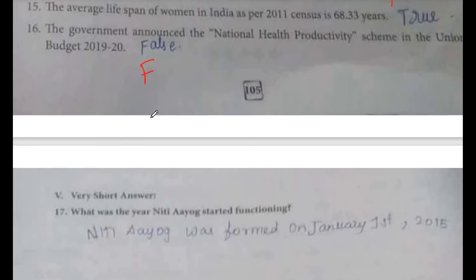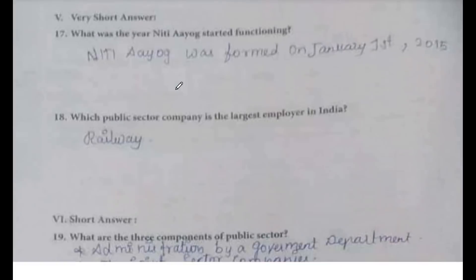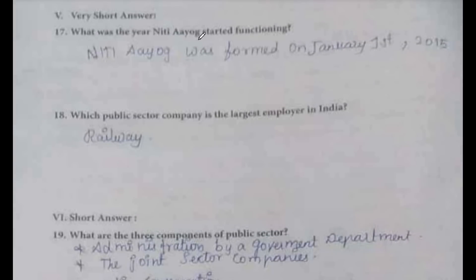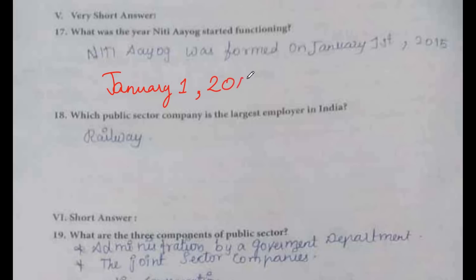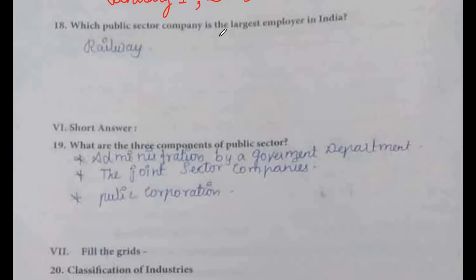Very short answer: what year did NITI Aayog start functioning? NITI Aayog started functioning on 1st January 2015. Which public sector company is the largest employer in India? Indian Railways.